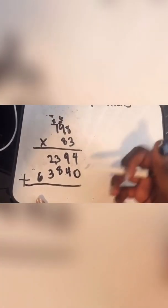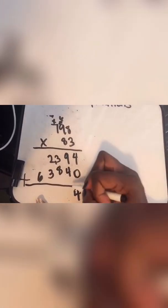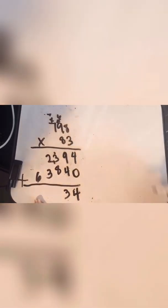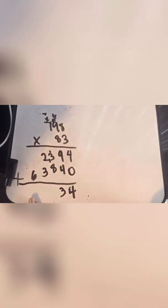We're going to say four plus zero is four. Nine plus four is 13. We're going to put that one there. We're going to say eight plus three is 11 plus one is 12.